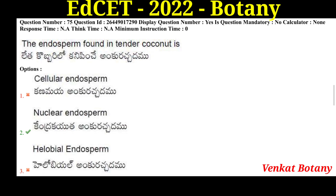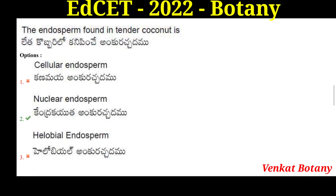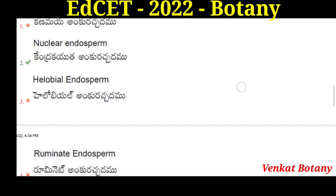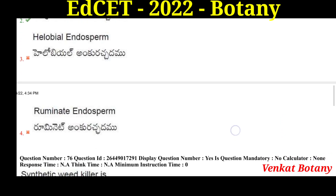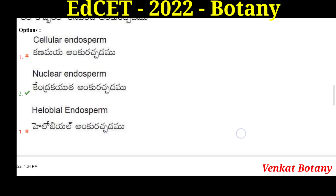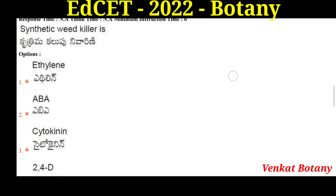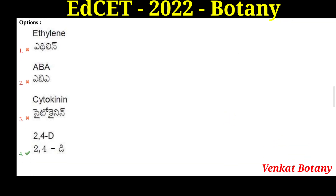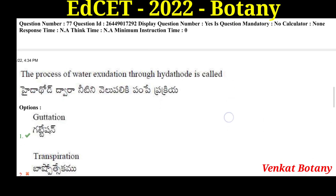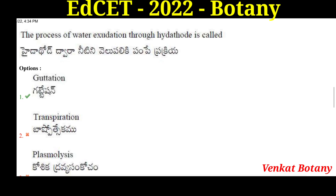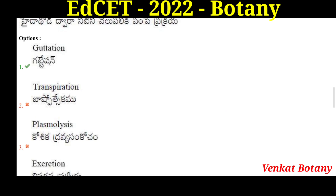The endosperm found in tender coconut is nuclear endosperm. Helobial endosperm is found in Crassa and gram. Ruminate endosperm is found in the Annonaceae family. The process of water exudation through hydathodes is called guttation.